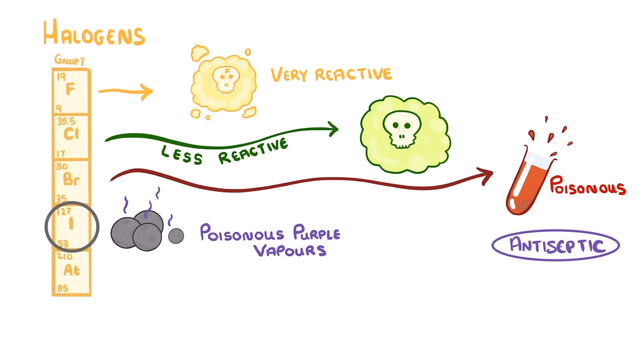Although iodine is also an antiseptic, which has saved millions of lives. And for those last two elements, astatine and tennessine, you can basically ignore them because they don't really come up in the course.